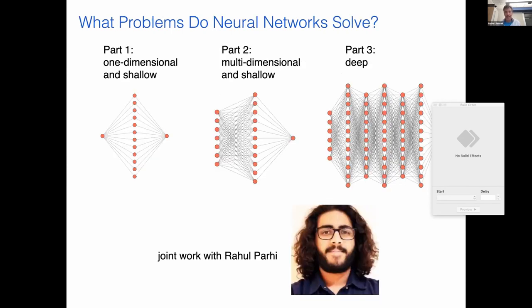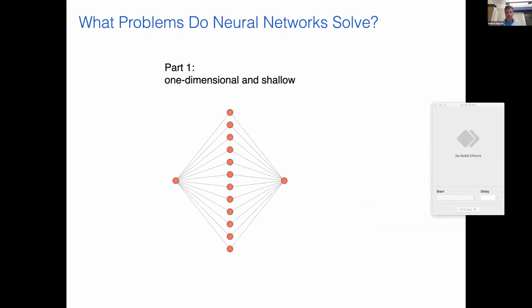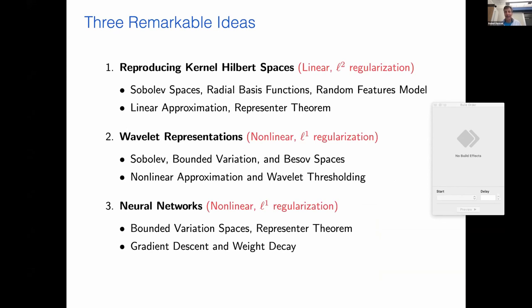The main problem I'm discussing is: what optimizations do neural networks actually solve? What are they the solution to? We know we can train a neural network and it may or may not work well, but are they the optimal solution to a particular problem? I'm dividing the talk into three parts: one-dimensional and shallow neural networks; multi-dimensional and shallow; and finally deep neural network architectures. This is joint work with Rahul Parhi, a fantastic graduate student at the University of Wisconsin.